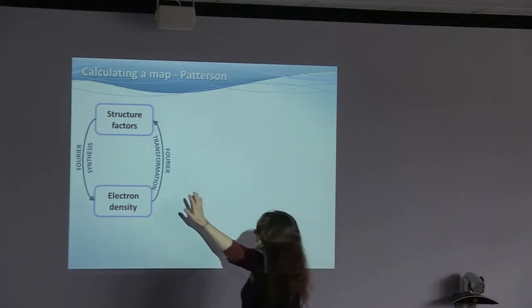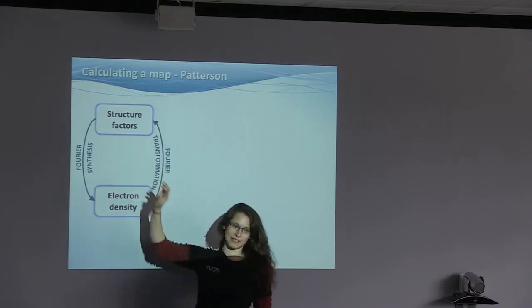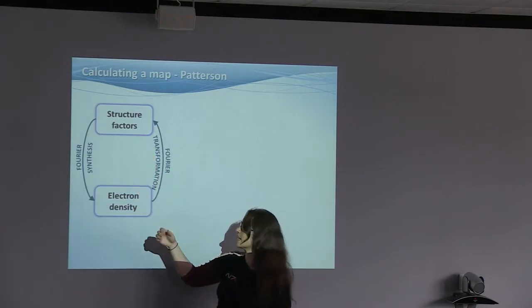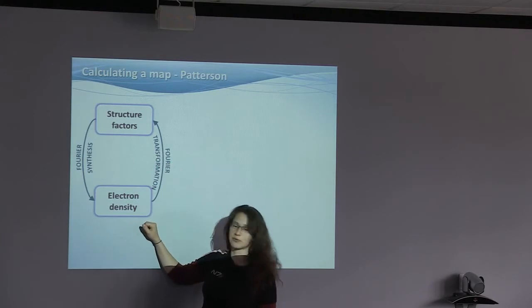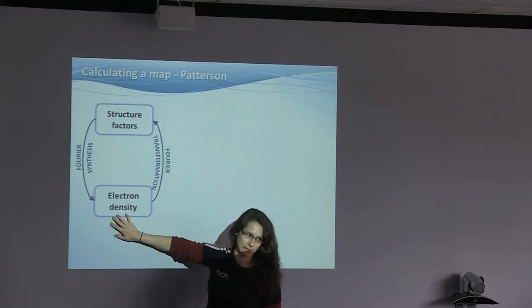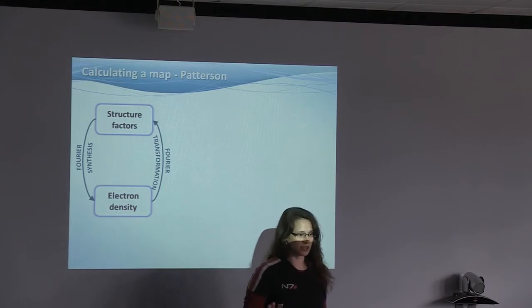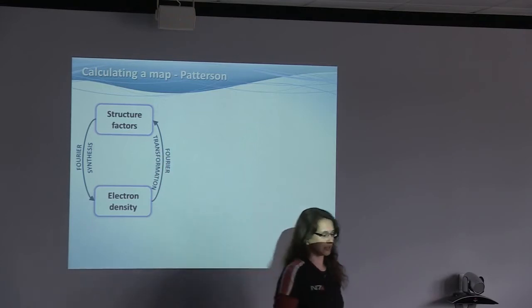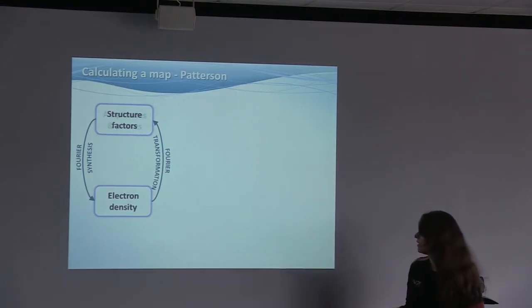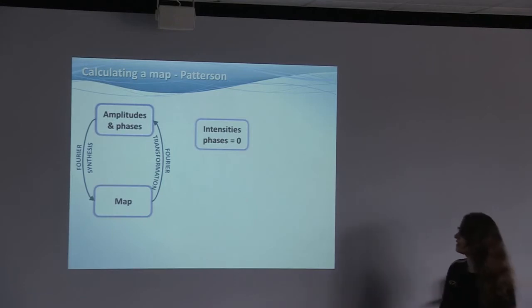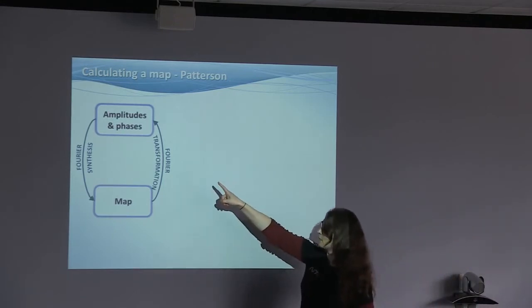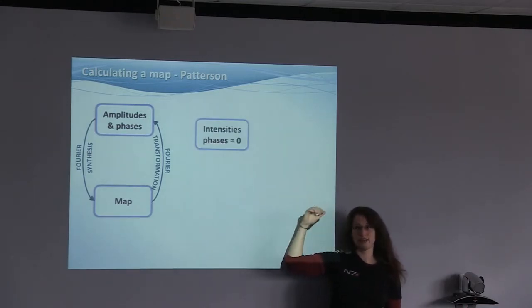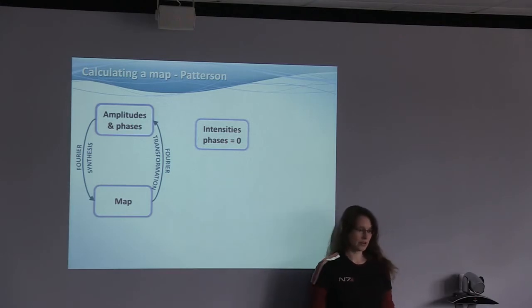Last week, we talked about structure factors, which consist of amplitudes that come from your intensities and phases. And with a Fourier transform, we can get to electron density. And in the electron density, we can usually build a structural model. So if we know all the structure factors, we can get the structure.